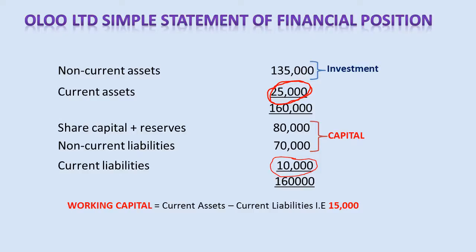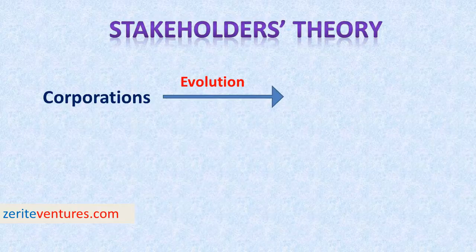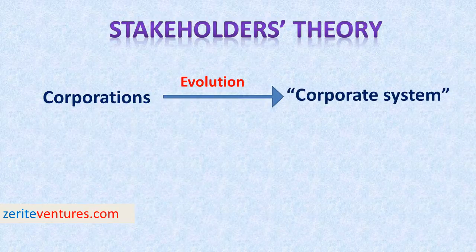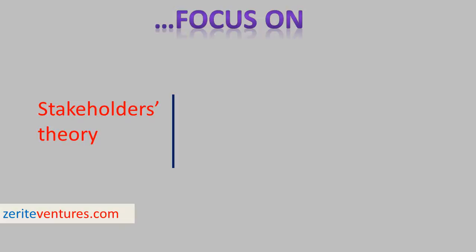Having covered that, let us jump into stakeholder theory. Corporations have evolved from being a legal setup where business transactions are carried out as a means of organizing economic life into a corporate system. This forms the basis of understanding stakeholder theory. Stakeholder theory begins with the assumption that values are necessary and explicitly part of doing business. It also pushes managers to be clear about how they want to do business — specifically, what kinds of relationships they want and need to create with their stakeholders to deliver on their purpose.